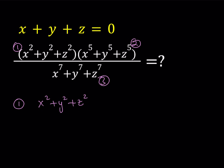For expression 1, since x plus y plus z equals 0, I'd like to replace z with negative x minus y, which can be written as the quantity x plus y multiplied by negative 1. So let's go ahead and do that and see what happens.